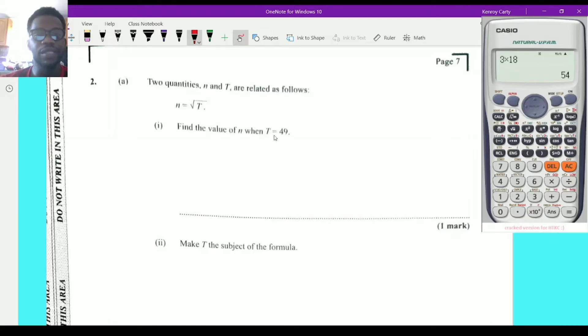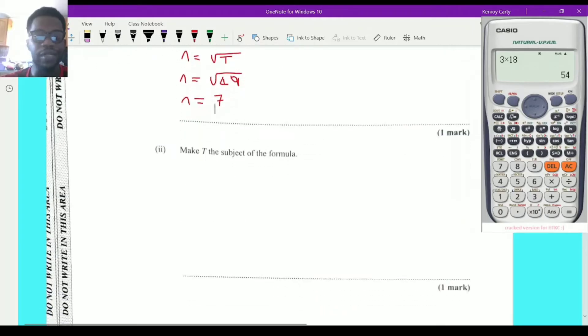Find the value of n when t is equal to 49. So I'm going to put that back there if you've not seen it. So n is equal to the square root of t, and I want to know what n is when t is 49. So all I'm going to do is replace t by 49. I'm going to have the square root of 49. And you can bring in your calculator, you can simply ask yourself, what number do I multiply by itself to get 49? That number is 7, so n is equal to 7. So you don't even need a calculator for that.